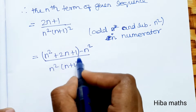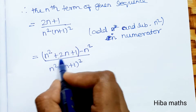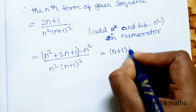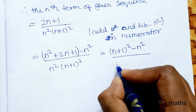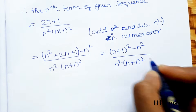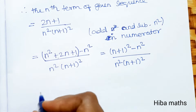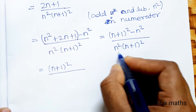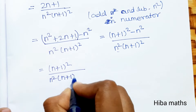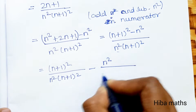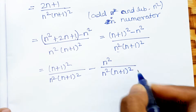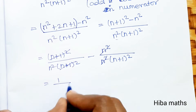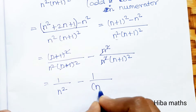The numerator's first three terms, n² + 2n + 1, form (n+1)² using the identity a² + 2ab + b². So we get [(n+1)² − n²] / [n²·(n+1)²], which separates into (n+1)²/[n²·(n+1)²] minus n²/[n²·(n+1)²]. This simplifies to 1/n² − 1/(n+1)².